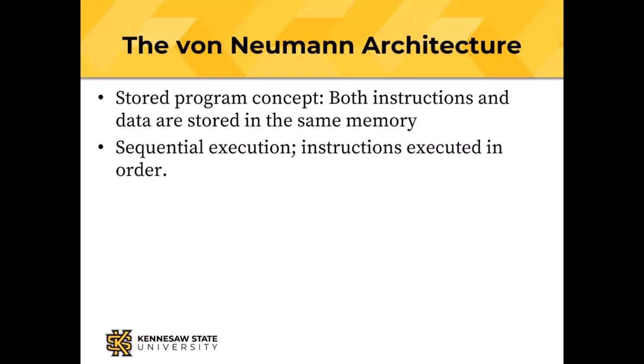Von Neumann also described sequential execution of instructions — instructions get executed in order, one after another. Prior to his first draft, people tried to build computers that could do many things in parallel, because the electronic circuits of the time were relatively slow. It turns out there's a huge amount of complexity in doing that, and von Neumann said: do one thing at a time and we get rid of all that complexity.